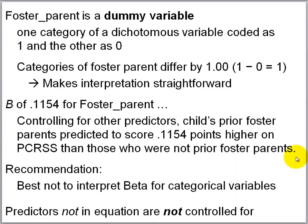Foster parent is coded differently — it is a dichotomous variable with two categories: yes, prior foster parent, or no. Foster parent was dummy variable coded. A variable is a dummy variable when one of its categories is coded as one and the other as zero. It is always helpful to have the lowest category coded as zero, as that makes the constant more interpretable.